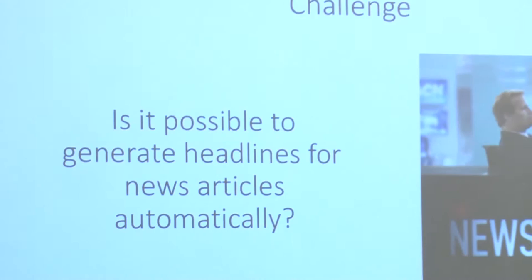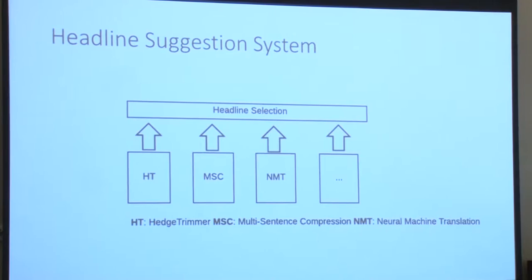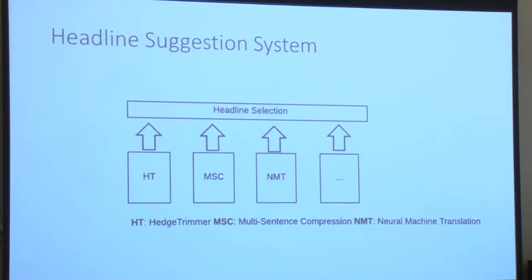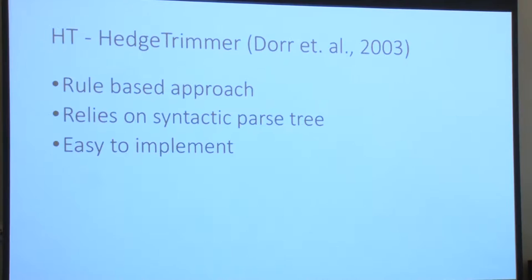We're exploring the possibility of generating headlines for a news article automatically. We explored three algorithms: Hedge Trimmer, Multi-Sentence Compression, and the state-of-the-art deep learning model — a Neural Machine Translation model. We incorporated these algorithms into the Headline Suggestion System, which is being injected into the CMS at the Washington Post so that the newsroom can consume the results easily. In the next few slides, we go through these algorithms one by one.